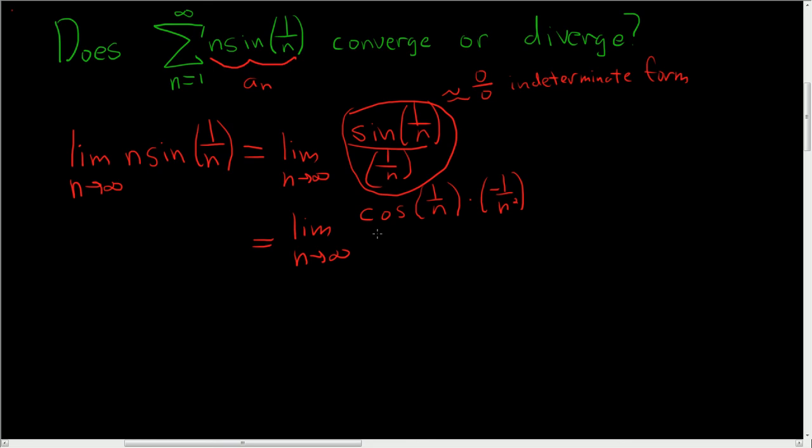Now if you don't have that memorized, at some point you will memorize it. And then the derivative of 1 over n on the bottom is again negative 1 over n squared. These cancel. Now it's clear that the limit is cosine of zero because 1 over n approaches zero. And the cosine of zero is 1,